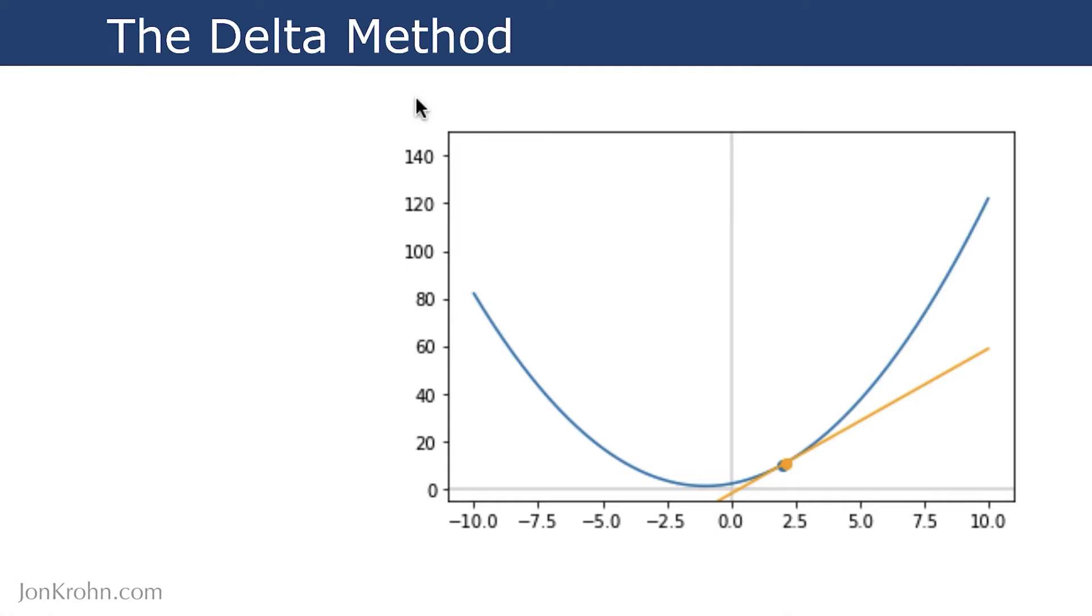In this video, we use a hands-on code demo in Python to develop a working understanding of the delta method, a highly visual, age-old technique that enables us to determine the slope of a curve at any given point on that curve. With the delta method, if we have a curve and we would like to identify the slope at a particular point on that curve, we can do that with a hands-on code demo.